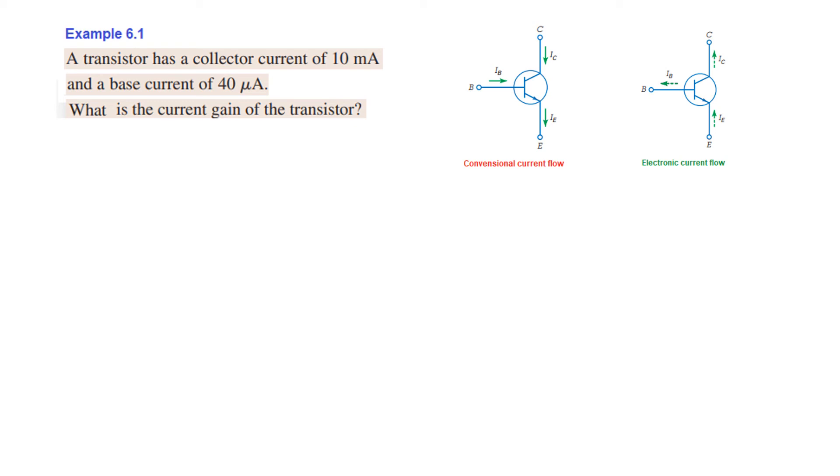The first one is a transistor has a collector current of 10 milliampere and a base current of 40 microampere. What is the current gain of the transistor. So the first thing is the collector current 10 milliampere. So this is the collector current 10 milliampere. The base current is 40 microampere.